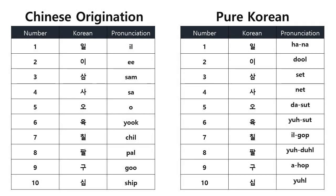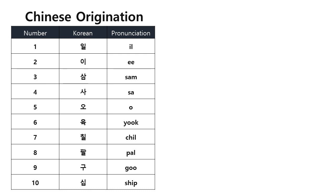There are two ways of counting numbers in Korean. One originates from Chinese, whilst one originates from pure Korean. The one which originates from Chinese is more frequently used, so this is what I will teach you today.